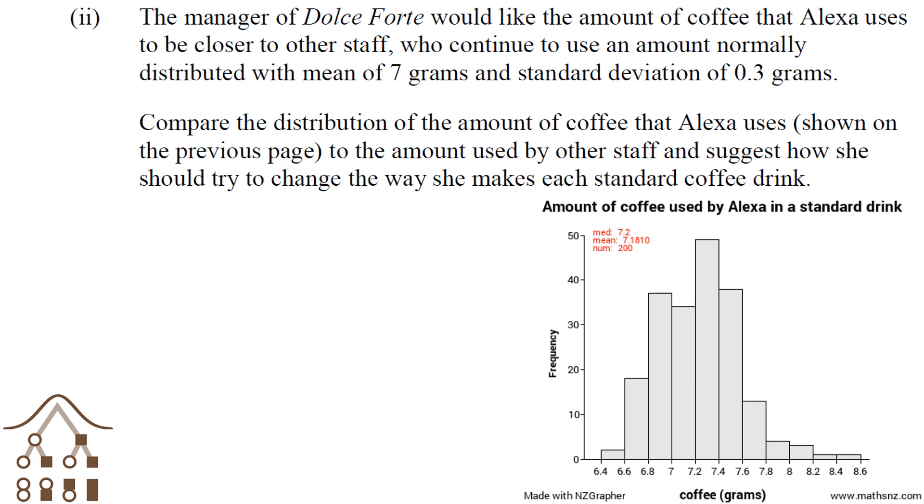We need to compare three things: the shape, the centre, and the spread. Looking at the shape of the coffees that Alexa makes, it looks like it's got a longer tail to the right. It looks a little right-skewed.